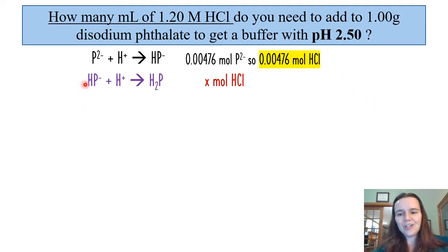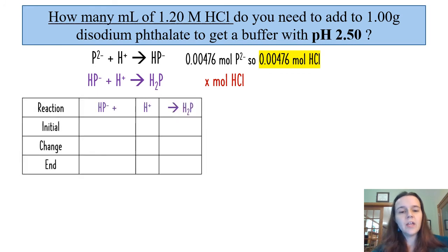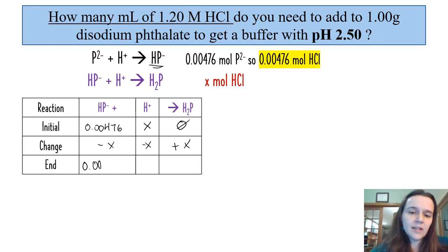Step two is to partially convert HP- to H2P, and we don't know how many moles of HCl that will be. That is now our x. In the ICE chart, we have our initial change and end. We have created 0.00476 moles of HP- when we got this completely done. We're going to be adding x moles of H+. We don't have any H2P to start with. Losing x from the reactant side and gaining x on the product side, then we are setting it up by finding out that at the end we've got x of the acid being formed with 0.00476 minus x of the base that is remaining.